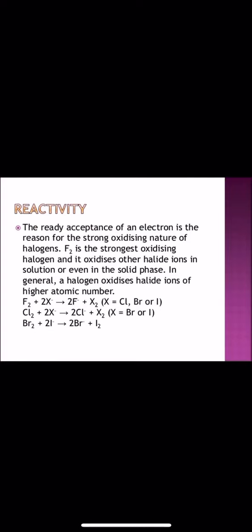The ready acceptance of an electron is the reason for the strong oxidizing nature of halogens. They are very electronegative, so they have the tendency to accept electrons and that is why they are strong oxidizing agents. Fluorine is the strongest oxidizing halogen and oxidizes other halide ions in solution or even in the solid phase. In general, a halogen oxidizes halide ions of higher atomic number as depicted in the given chemical equation.